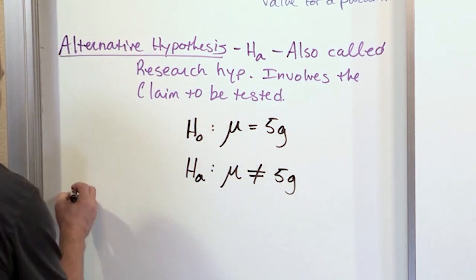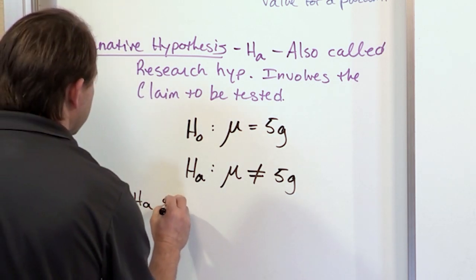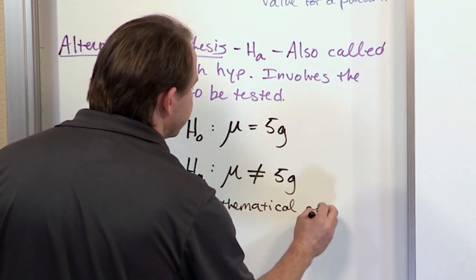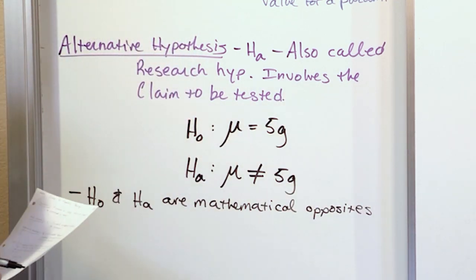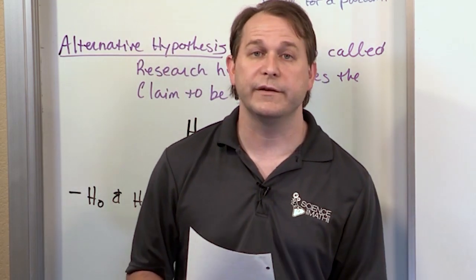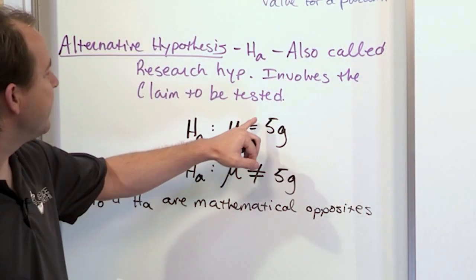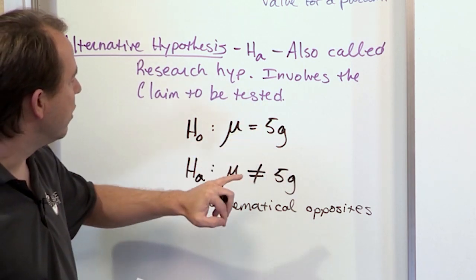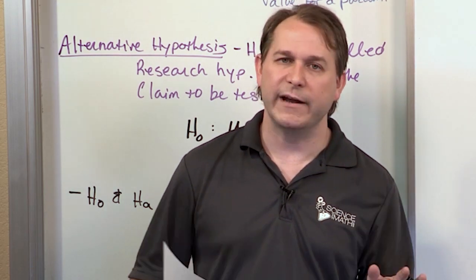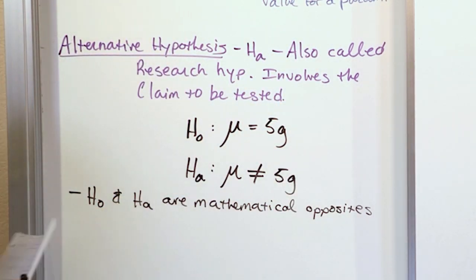An important thing to realize: the null hypothesis and the alternative hypothesis are always mathematical opposites. This one says the mean equals five; this one says it's not equal to five. In some cases we'll have a less-than sign for the null, which means the alternative has to be greater-than. The alternative is always going to be whatever the null hypothesis is not. When we do many problems you'll see it over and over again.